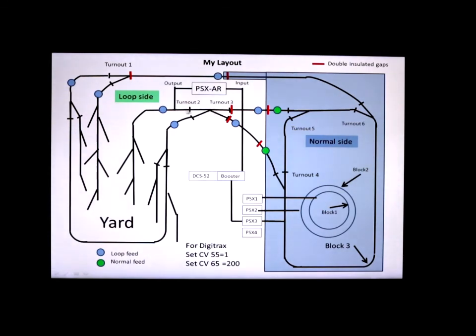And, the way the power is hooked up, the booster goes to the input of the PSX-AR, right here. The output goes from here to the isolated part. And, I just have multiple feeds, feeder drops, just to keep the voltage up. And, then the booster also goes to the PSX circuit breakers, right here, to feed block 1, block 2, block 3. And, I made a note for myself down here, to set CV 55 to 1, and CV 65 to 200, so I don't forget.